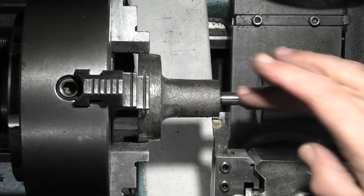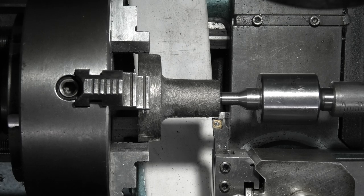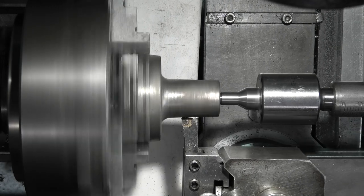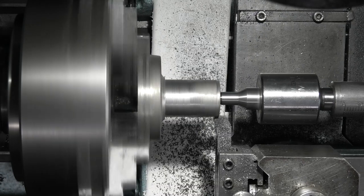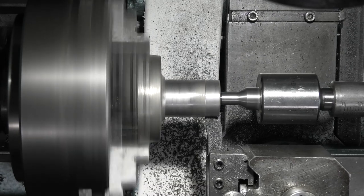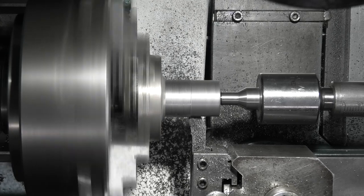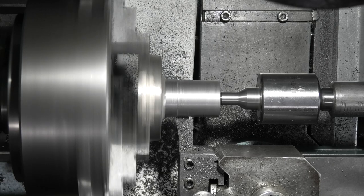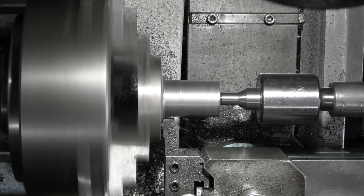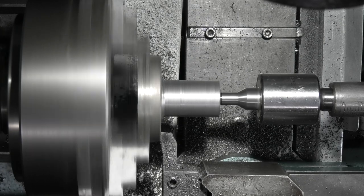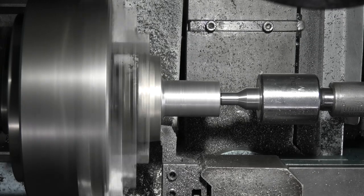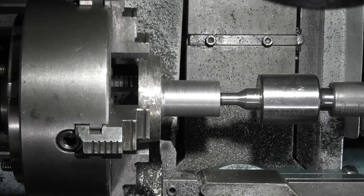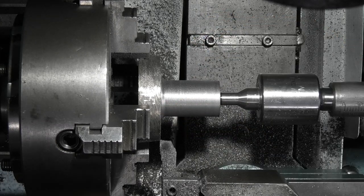So I want to turn this diameter down to match the spindle outside diameter. Let's clean the face up, now I'll carry on working on the diameter.